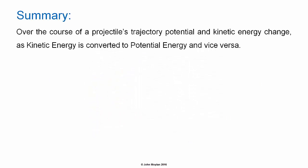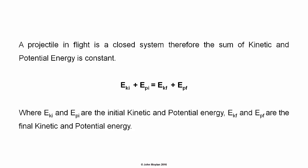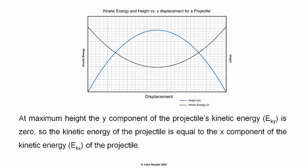Summary: Over the course of a projectile's trajectory, potential and kinetic energy change, as kinetic energy is converted to potential energy and vice versa. A projectile in flight is a closed system, therefore the sum of kinetic and potential energy is constant, so the sum of the initial kinetic and potential energy equals the sum of the final kinetic and potential energy. At maximum height, the Y component of the projectile's kinetic energy is zero, so the kinetic energy equals the X component of kinetic energy. This can be seen in the graph where the kinetic energy plots as a parabola, but does not drop to zero at the top of the trajectory. Thank you for watching.